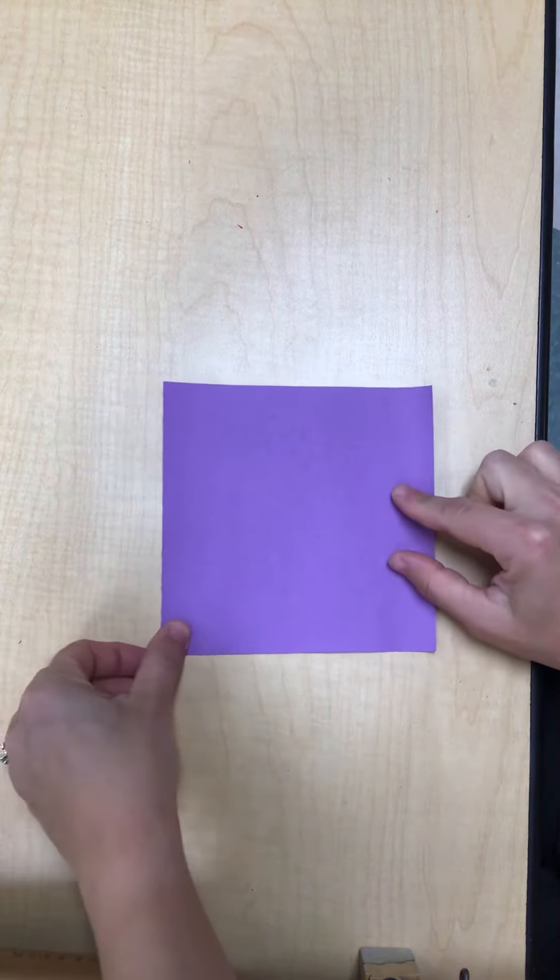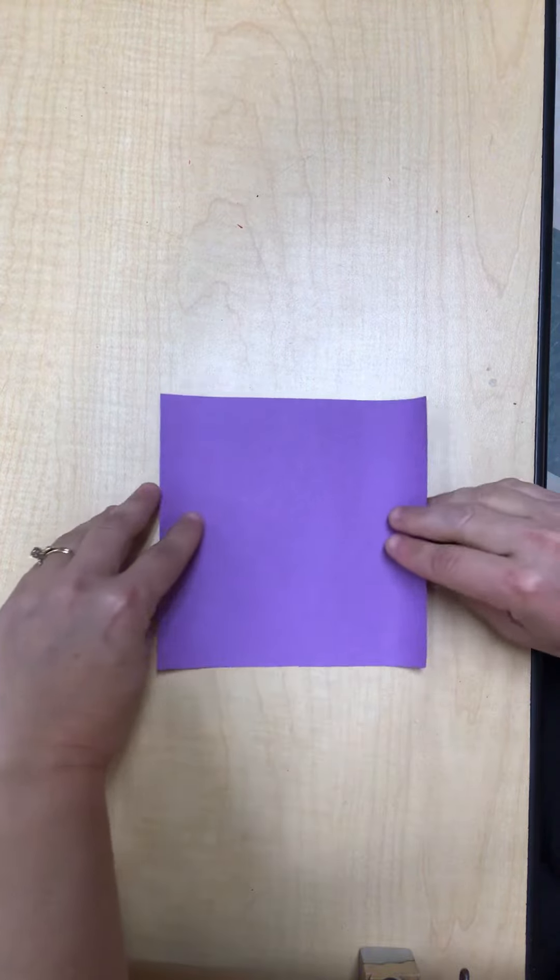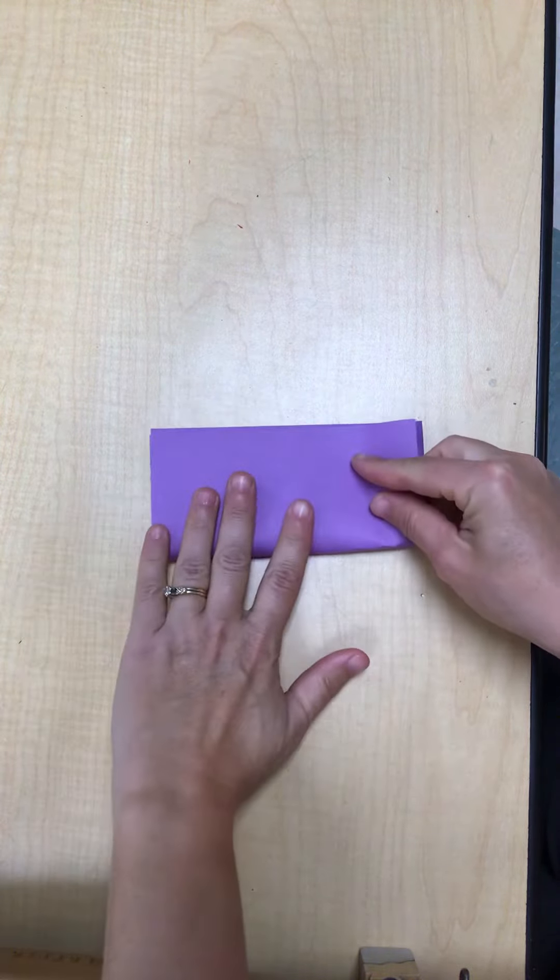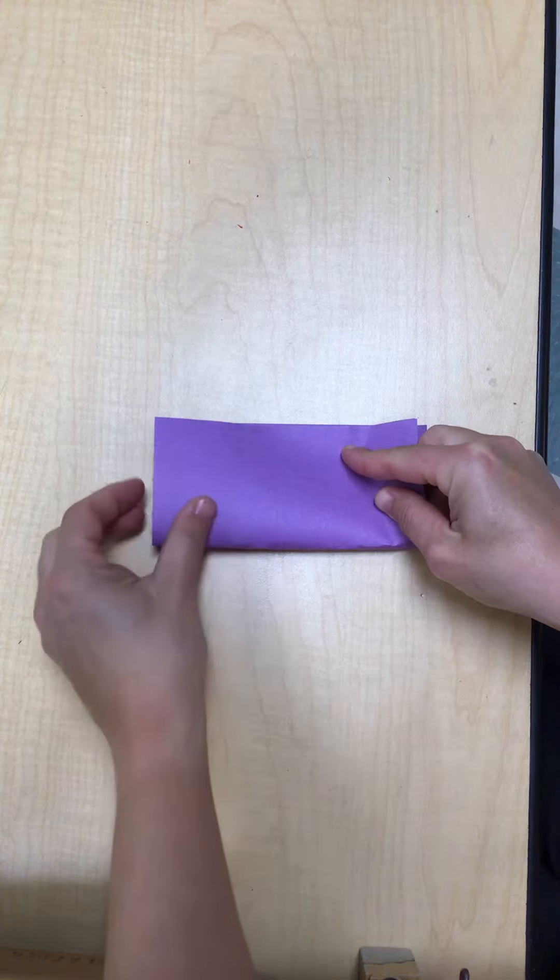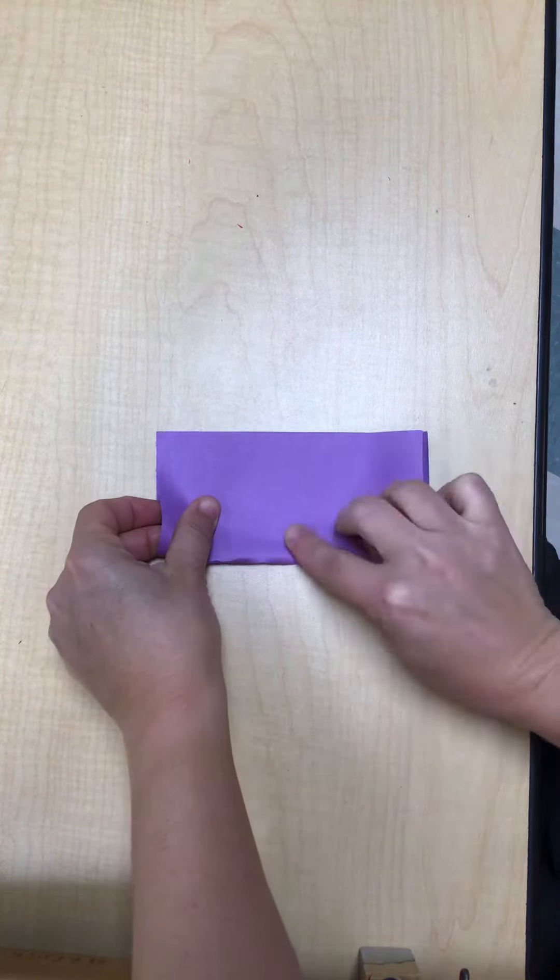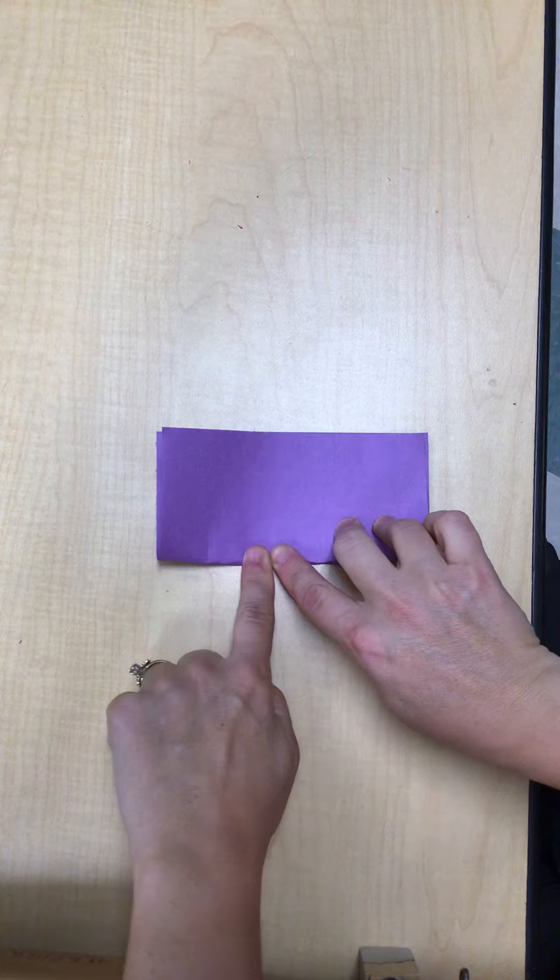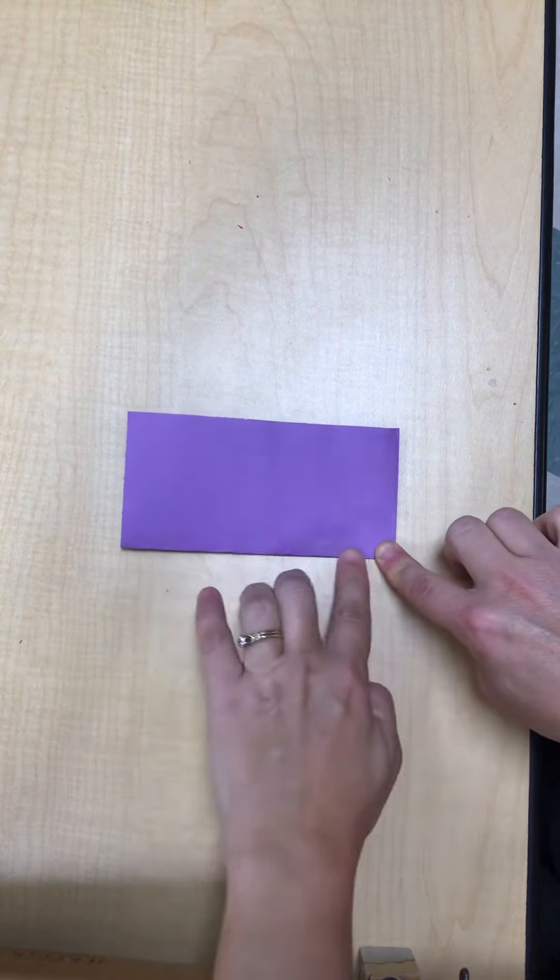Again, have your square piece of paper. You're going to fold the paper in half horizontally. Line up these edges and crease that fold.